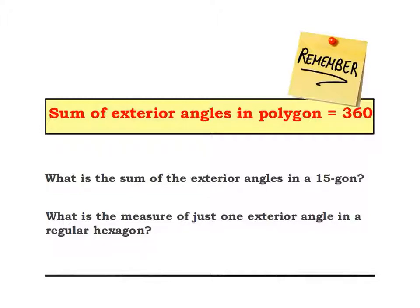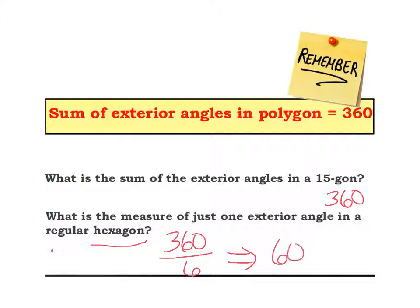So we have a theorem: the sum of the exterior angles in any polygon is always going to equal 360. For example: what is the sum of the exterior angles in a 15-gon? Well, it doesn't matter — the sum of the exterior angles is always 360. Now a trickier one: what is the measure of just one exterior angle in a regular hexagon? The sum is always 360, but if I want just one of them, I divide by how many there are. In a hexagon there are six, so 360 divided by 6 means each exterior angle is 60 degrees.